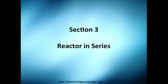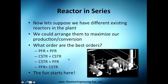We're almost done with chapter 2 and we're now in section 3, which is almost the last block but a very important one. We're going to see how to arrange reactors. Suppose we have different existing reactors in the plant — different tanks and so on — and we'd like to arrange them in an order that maximizes our production or conversion rate.